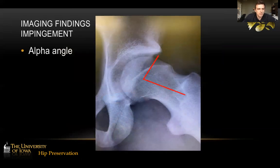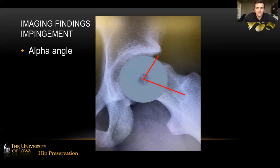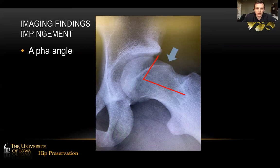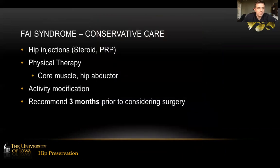For imaging findings, we typically use the alpha angle, where you draw a best-fit circle around the femoral head and find where the head-neck junction becomes aspherical. You can see this is a pretty large bump on this young high school football player I treated.